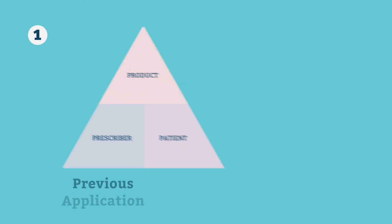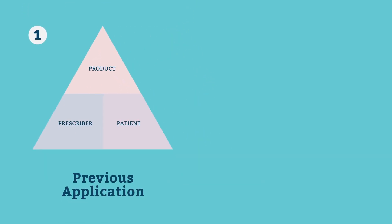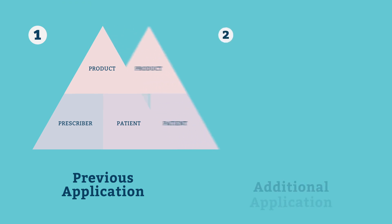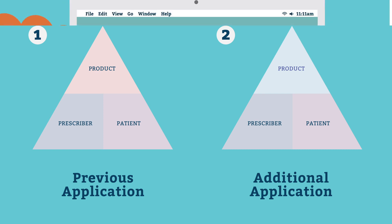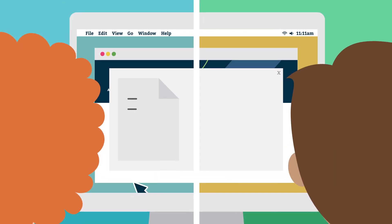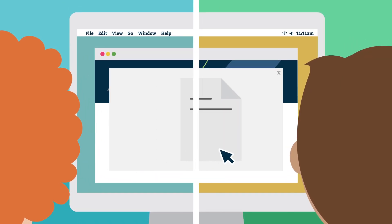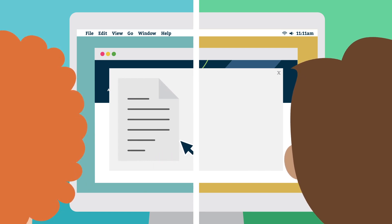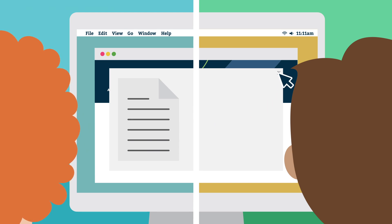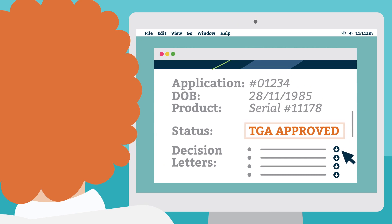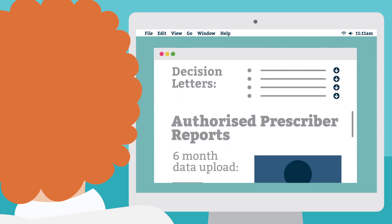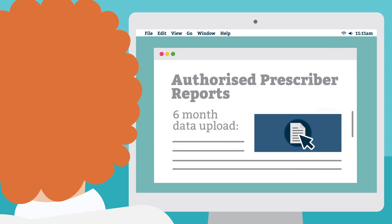For example, you can apply for access to an additional category for the same patient by copying your previous application and editing the category details. The online system also allows users at the same hospital or pharmacy to share application documents, making it easier to work together when arranging patient access to a product. You can view the status of your application and download decision letters directly from the online system. Authorised Prescribers can also submit six-monthly patient data reports easily using the online system.